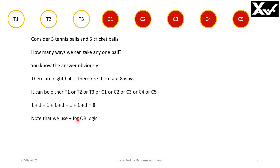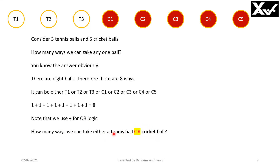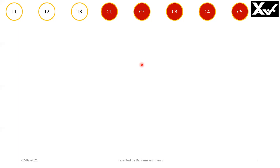Note that we are using a plus sign for OR logic — this is very important. Now, how many ways can we take either a tennis ball or a cricket ball? Note that only OR is used here, therefore addition. A tennis ball can be taken from three tennis balls in three ways, and a cricket ball from five cricket balls in five ways. Since we said OR, therefore three plus five equals eight ways — same answer.